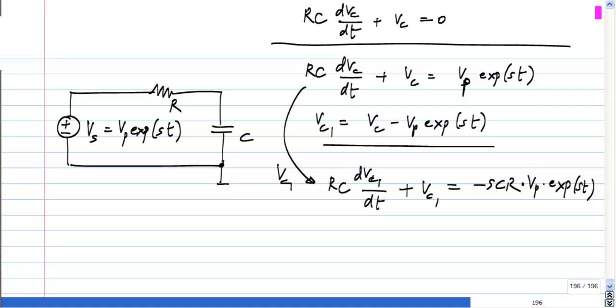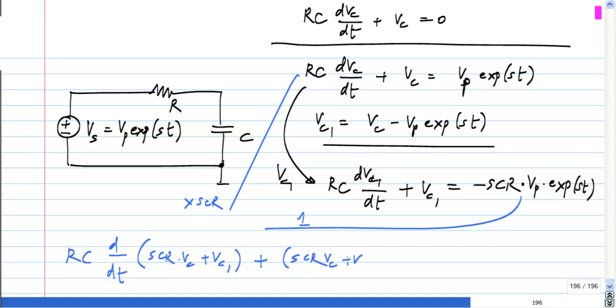We can try a linear combination of these two equations. This multiply by SCR and this multiply by 1. What we get is RC, because it is a linear operator, I put this inside the derivative and then here also I get right hand side 0. So now this new variable you could call this Vc2 if you want.